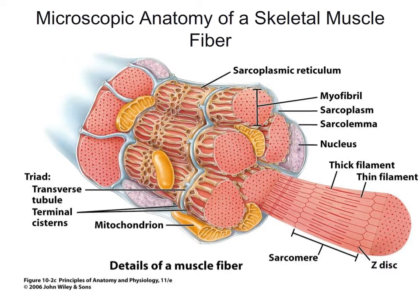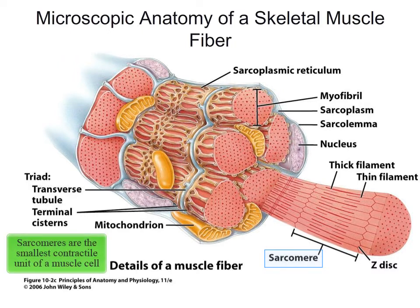Now we'll take a closer look at the components of a skeletal muscle fiber. The majority of the inside diameter is filled with myofibrils — the contractile organelles within a skeletal muscle cell. Each myofibril is divided into repeating units called sarcomeres, which are the smallest contractile unit of a skeletal muscle. When the sarcomeres contract, the myofibrils contract, and eventually the whole muscle cell and the whole muscle will contract.